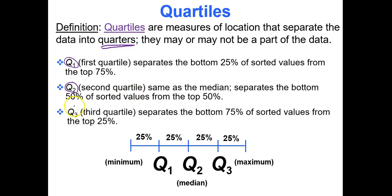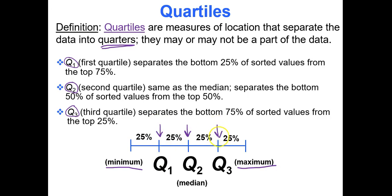The third quartile, or Q3, separates the bottom 75% of sorted values from the top 25%. In your data set you'll always have a minimum value and a maximum value, with your quartiles spaced out accordingly. They break the data literally into quarters: 25%, 25%, 25%, 25%.